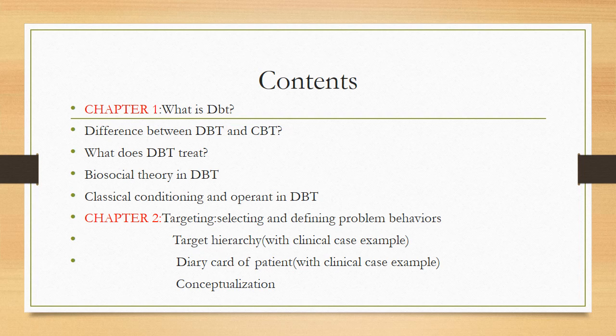The second goal we will set is therapy-interfering behaviors. These include missing therapy appointments, refusing to practice suggested skills, and not concentrating in therapy sessions. The third goal covers quality-of-life interfering behaviors such as vomiting, binging, and restricting food to fewer than 1,200 calories a day. These three main goals will be set in the target hierarchy.